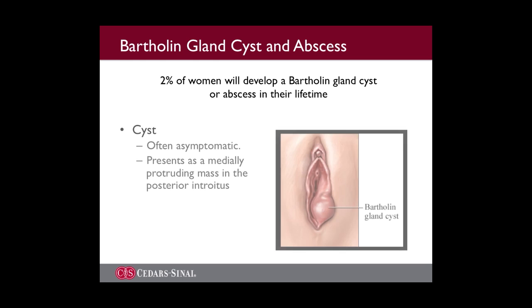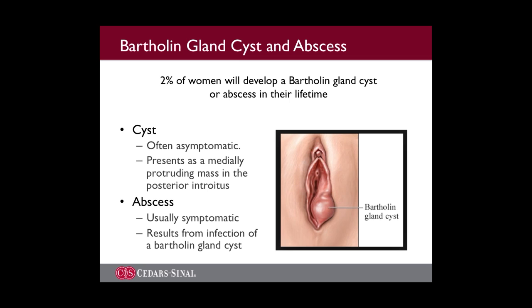Bartholin gland cysts occur when an obstruction of the distal Bartholin duct results in the retention of secretions, with resultant dilation of the duct and formation of a cyst. These are often asymptomatic, or may present as a mass which can cause discomfort to the patient. The cyst may become infected, and an abscess may develop in the gland.